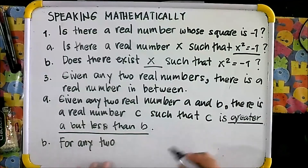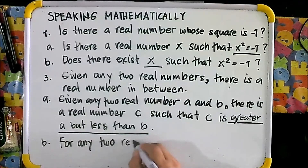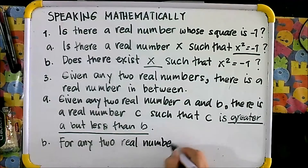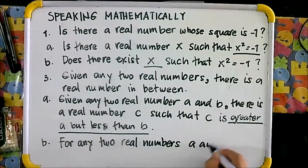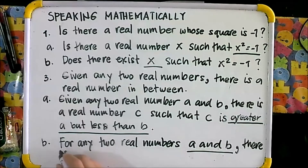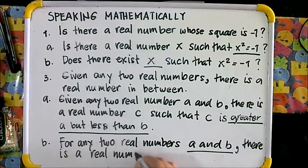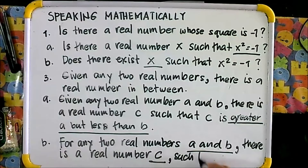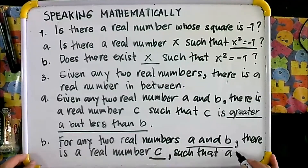For letter B: for any two real numbers A and B, there is a real number C such that A is less than C and C is less than B.